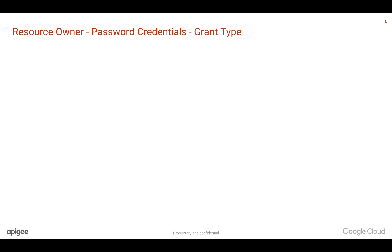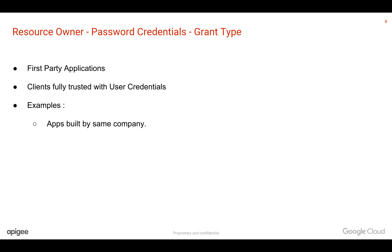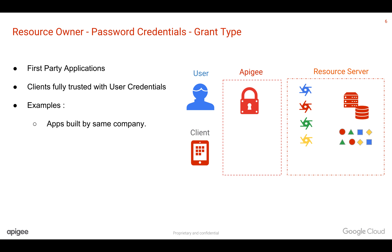The next one is the resource owner password credentials grant type. This is used in first-party applications where the application is built by the same company. These applications take the username and password, authenticate the user, and generate an access token which is used in subsequent calls. Clients are fully trusted with the user credentials in this grant type.